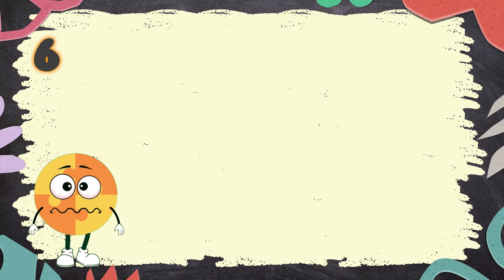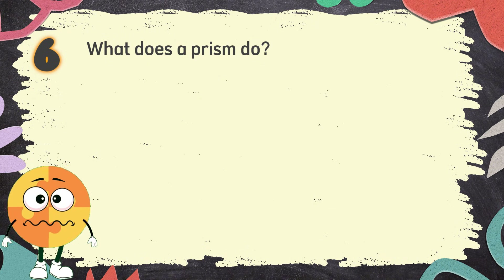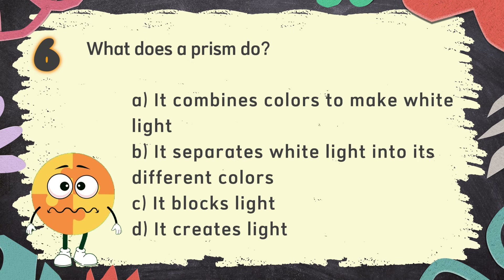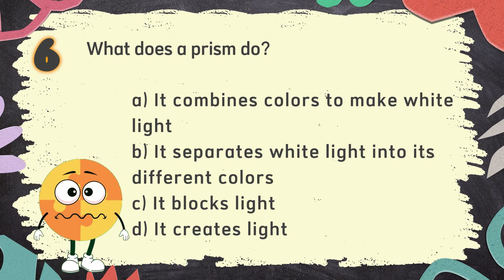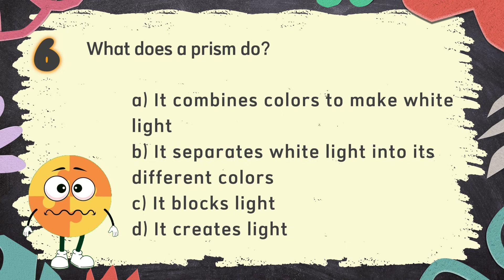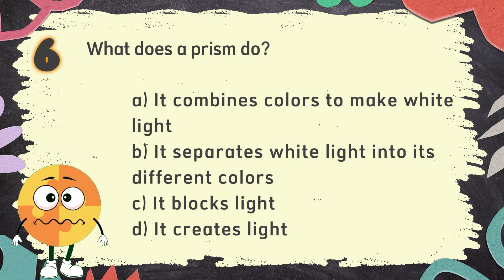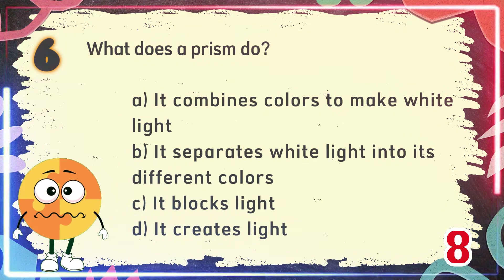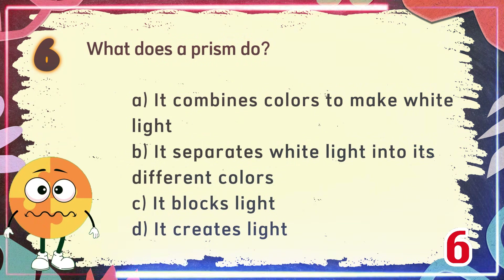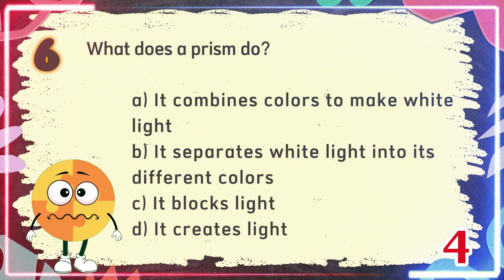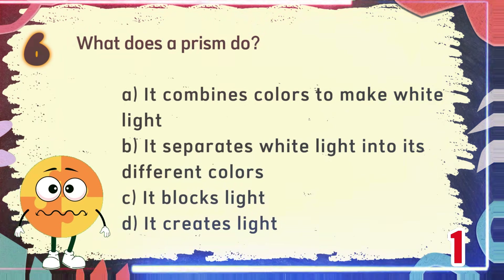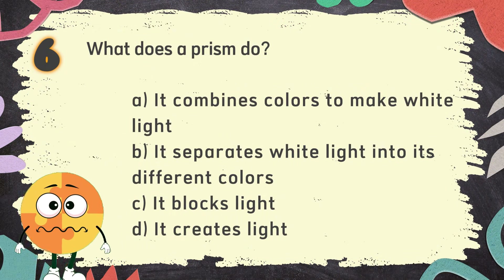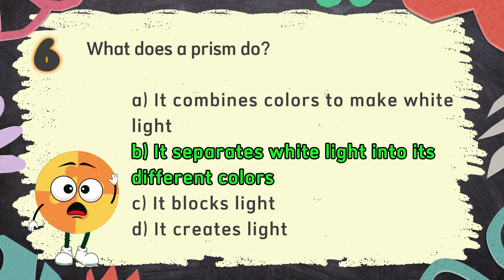Number 6. What does a prism do? The choices are: A. It combines colors to make white light, B. It separates white light into its different colors, C. It blocks light, D. It creates light. The correct answer is B: It separates white light into its different colors.